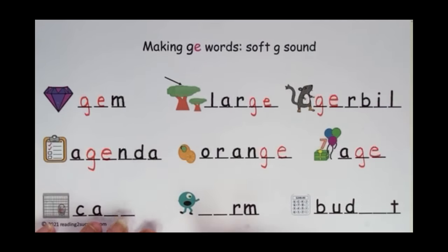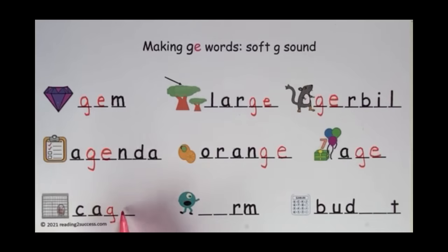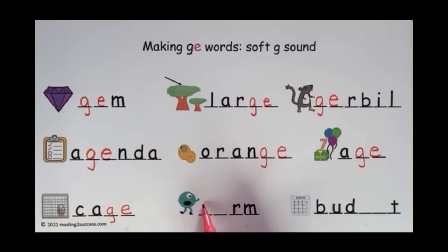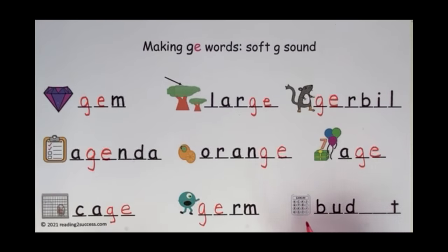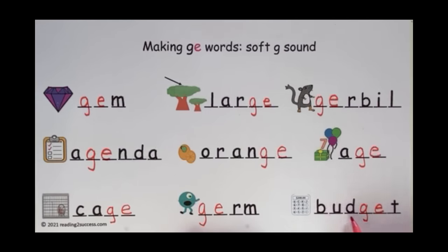Then we're going to move down here. This is a little pet inside a cage — G-E for soft G — cage. This is a germ, and it looks like it's running away. The soft G sound is made with G-E — germ. And then our last word: a calculator shows budget. The soft G here using the letters G-E — budget.